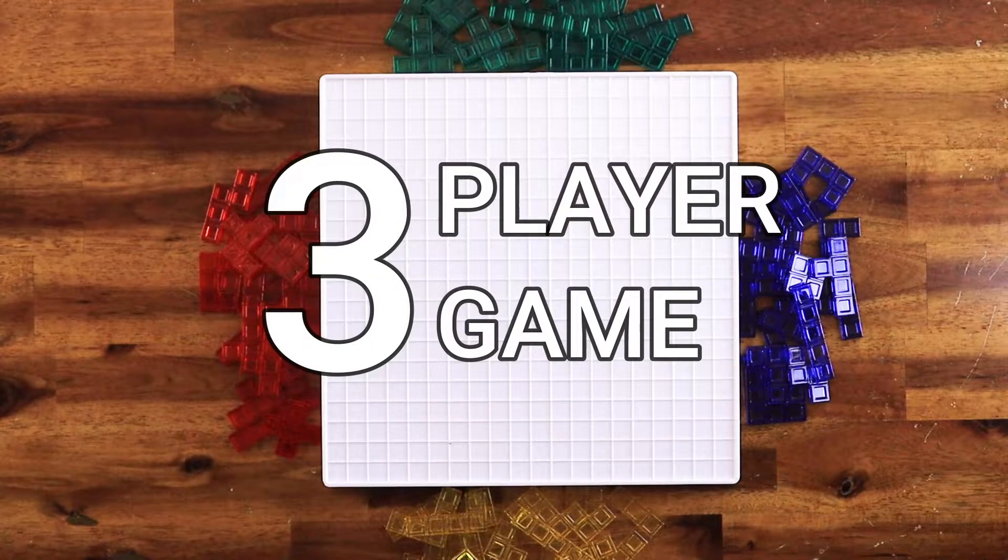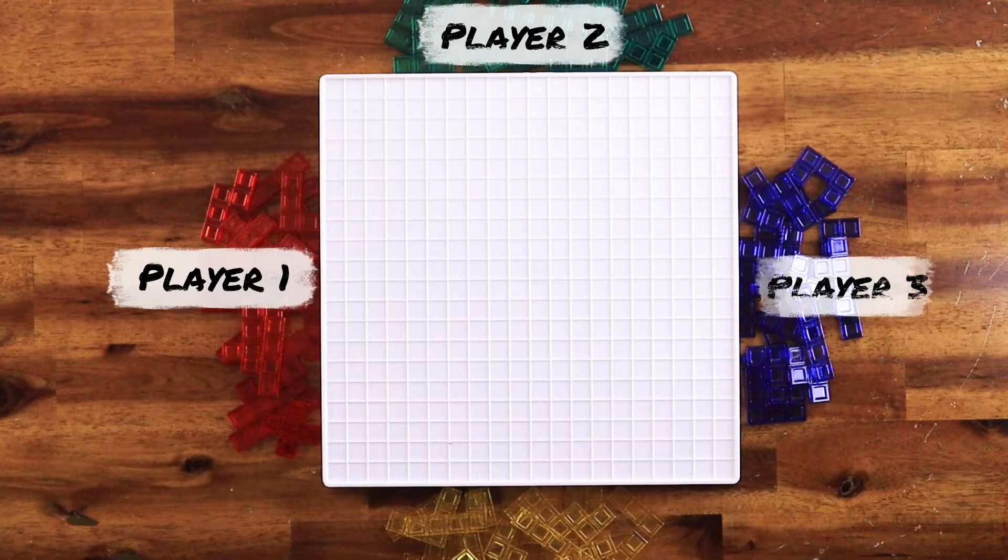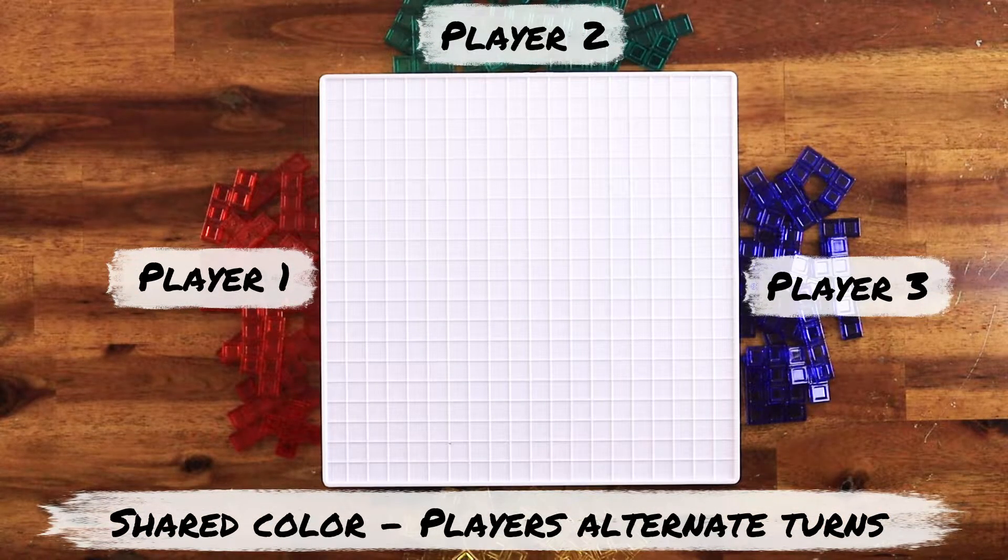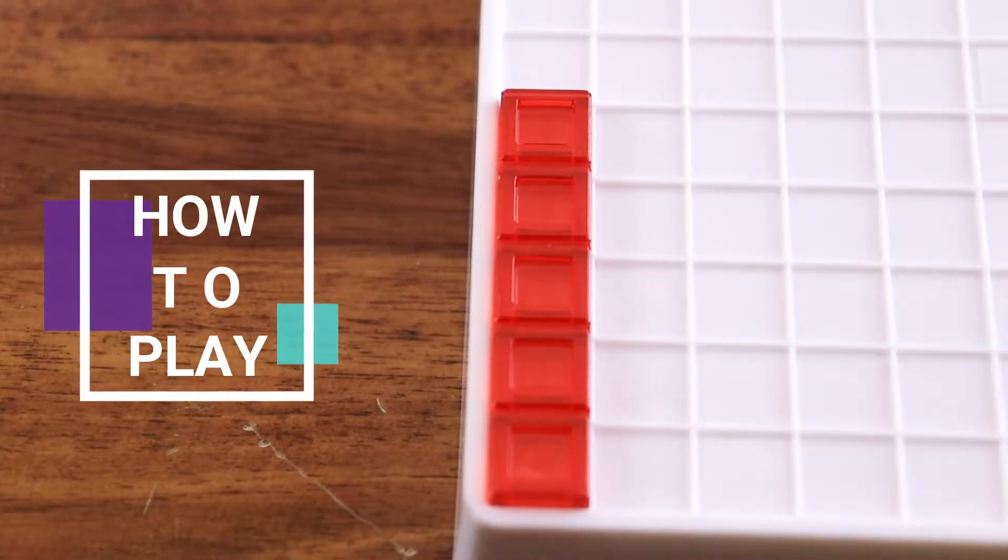And if you're playing a three-player game, each player chooses a color and the remaining color is shared and played alternatively by each player when its turn comes up. And now you're ready to learn how to play.